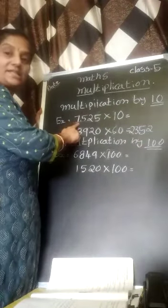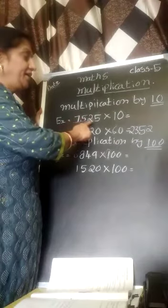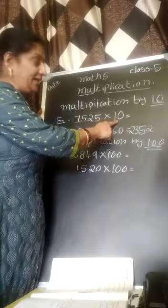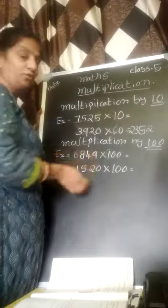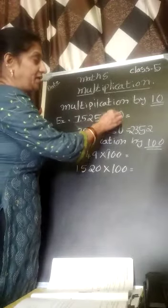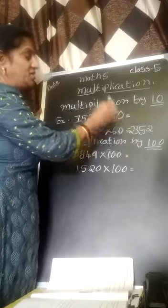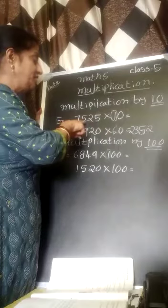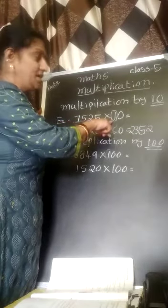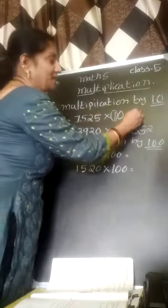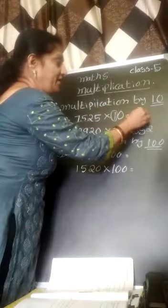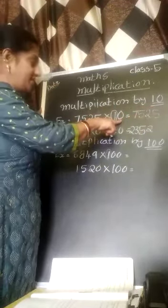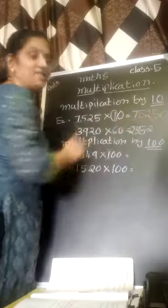For example, 7525. You are going to multiply this number by 10. So how to do this? Just concentrate on the digit number 1. So 7525 into 1 is the same, 7525. What is remaining here? 0. You have to put one 0. This is the answer.